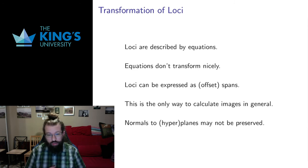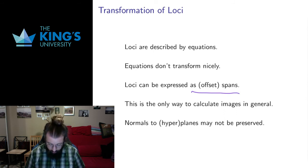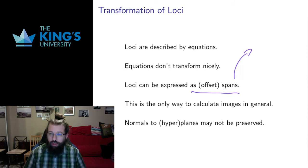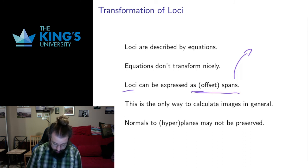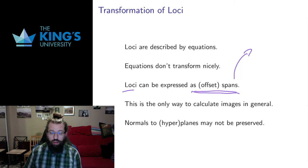So if we want to understand a matrix acting on a locus, really the best thing to do is express that locus as an offset span, and that's a thing we already know how to do. We can write the locus as a system, we can solve the system, we can express the system as free parameters, and in a system, a solution expressed as free parameters, we can write that as an offset span. So via the work we've done on systems, and how to solve them, and how to express those solutions, a locus can always be expressed as an offset span, and then we can calculate the image of that offset span as we did in the previous slide. And this in general is the only way to calculate images of loci.